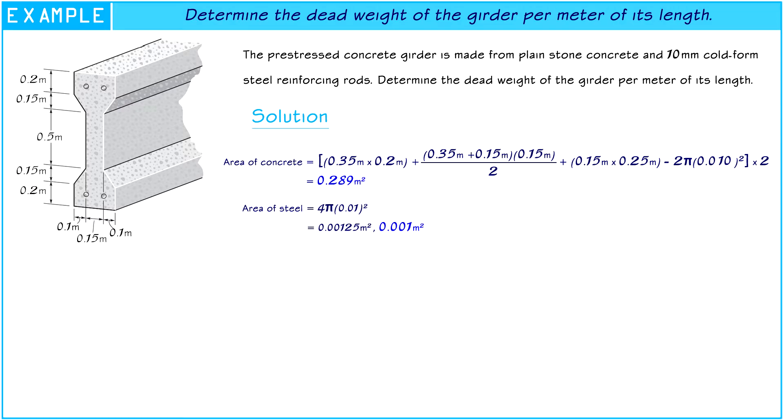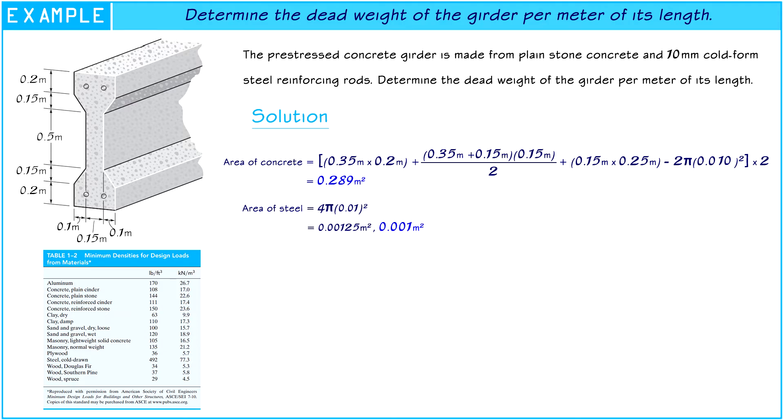Now we are going to find the densities of those materials. In the lesson of types of structures and loads, we have an established table 1.2. It is the table of minimum densities for design loads from materials. From the table, we have the density of plain stone concrete is equal to 22.6 kN per cubic meter. The density of cold-formed steel is equal to 77.3 kN per cubic meter.